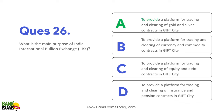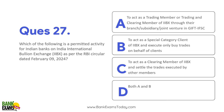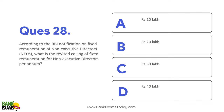IIBX ka full form - India International Bullion Exchange, IFSC Limited. Main purpose of IIBX - to provide a platform for trading and clearing of gold and silver contracts in GIFT City. Which activity is permitted for Indian banks on IIBX as per RBI circulars? They can act as trading members or trading and clearing members of IIBX through their branch, subsidiary, or joint venture, or act as a special category client and execute only buy trades on behalf of their clients. Khud ke trade initiate nahi kar sakte.